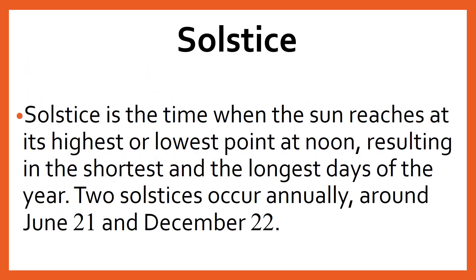Students, solstice is the time when the sun reaches its highest or lowest point at noon, resulting in the shortest and the longest days of the year. The summer solstice in the northern hemisphere occurs about June 21, while the winter solstice occurs about December 22. The summer solstice is the longest day of the year and the winter solstice is the shortest day of the year.